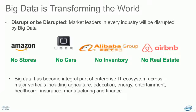Big data technologies have become ubiquitous in all enterprises and all major verticals, whether it is education, entertainment, agriculture, or healthcare. Big data is really transforming the world. Consider, for instance, Amazon, Uber, and Airbnb. Amazon runs the largest online retail store having no stores. Uber manages the largest fleet of taxis with no cars. Similarly, Airbnb with no real estate. So data is the new oil.